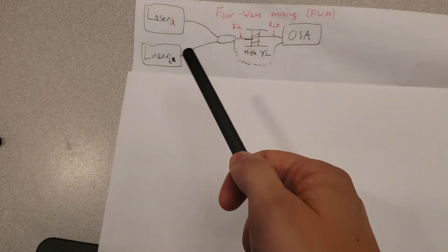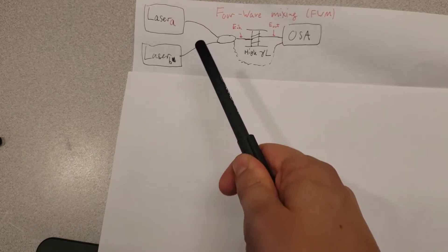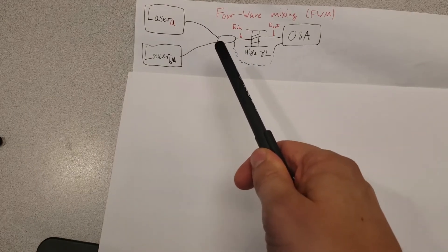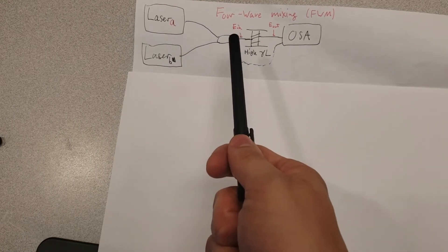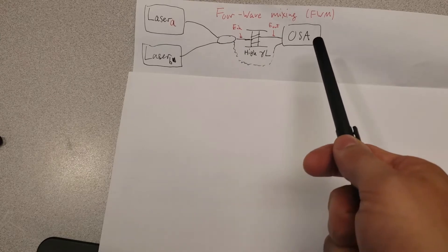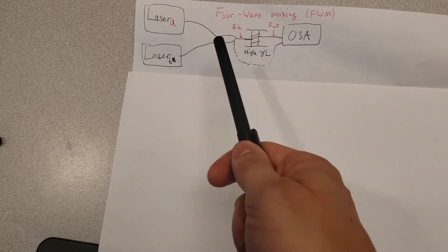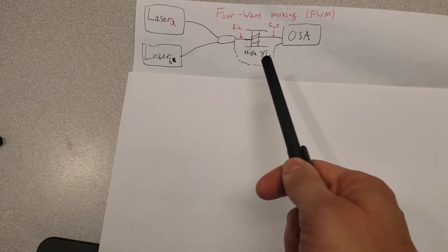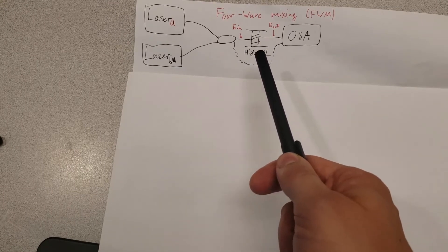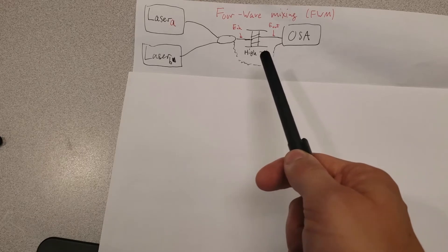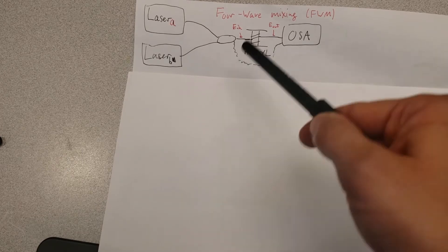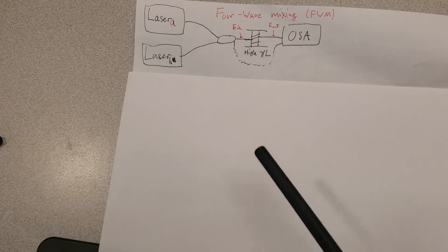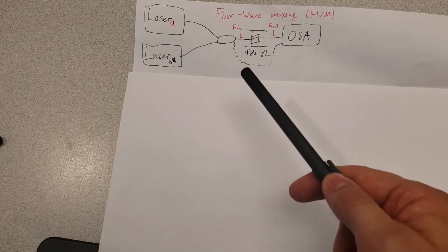Let's consider this setup where we have two lasers being merged inside of a coupler and then we split off part of the light and send it directly to an optical spectrum analyzer, then take the other part of that light and send it into an optical fiber with a high non-linearity, so basically a high length or long length and also a high gamma parameter which indicates non-linearity as explained in my video on self-phase modulation and supercontinuum generation.